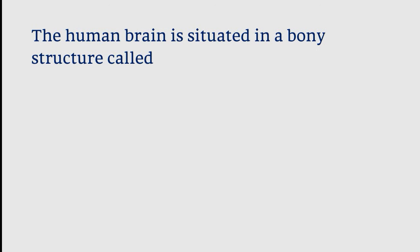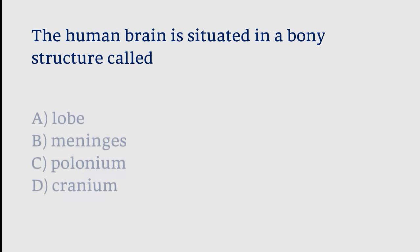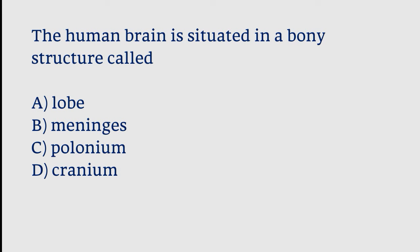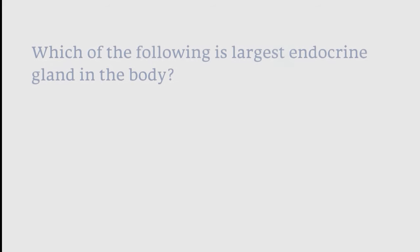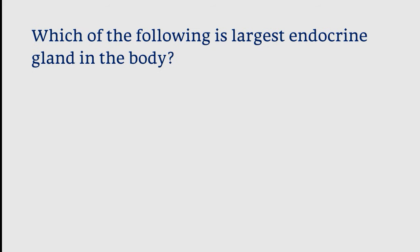The human brain is situated in a bone structure called: lobe, meninges, folonium, or cranium. The correct answer is option D. The human brain is situated in a bone structure called the cranium.